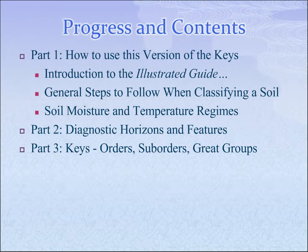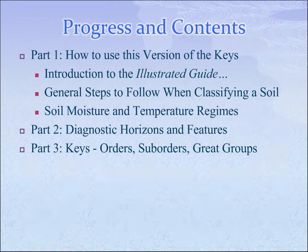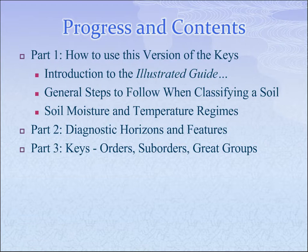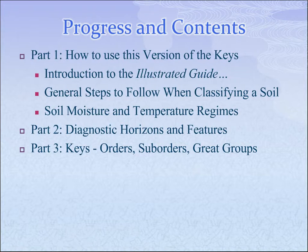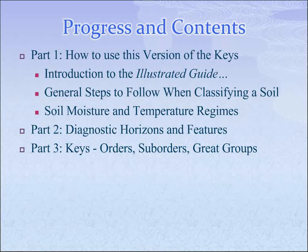The guide consists of basically three parts. Part one is how to use this version of the keys — it tells you how to use the document, gives an introduction, some general steps to follow for students learning to classify a soil, and information about soil temperature and moisture regimes. Part two is diagnostic horizons and features, where a lot of the illustrations come in — for example, photos of redoxomorphic features, which allow immediate visual comprehension of what's being discussed. Photos of almost all diagnostic features are included for students.